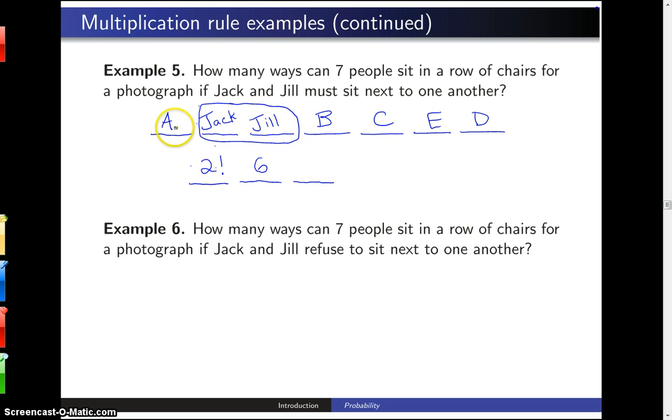The next decision are these other five people. How many ways are there to order them from left to right? And from an earlier example, there are five of them so there are five factorial different ways of placing them.